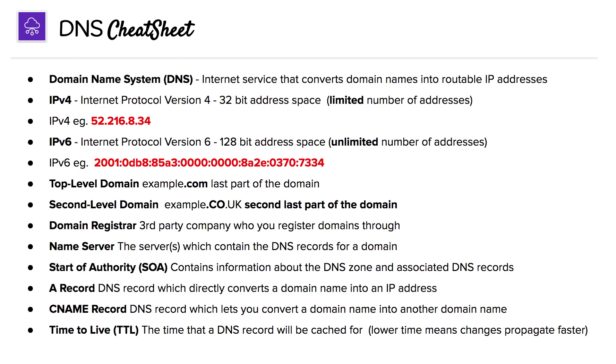We have two types of internet protocols. We have IPv4, which is a 32-bit address space and has a limited number of addresses.